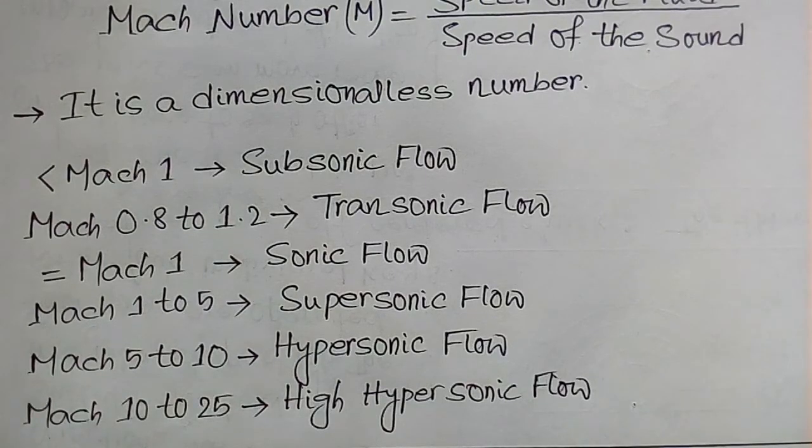When the flow velocity is from Mach 5 to 10, it is called hypersonic flow. When the flow velocity is from Mach 10 to 25, it is called high hypersonic flow.